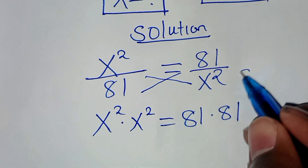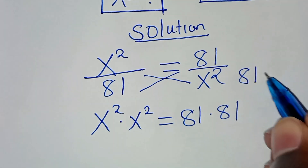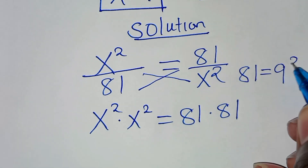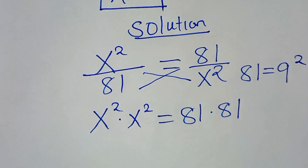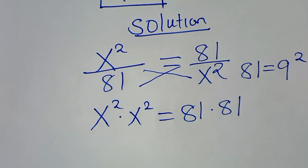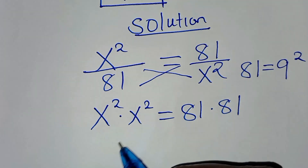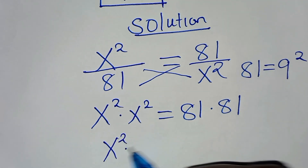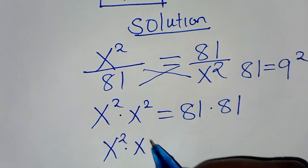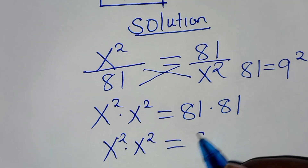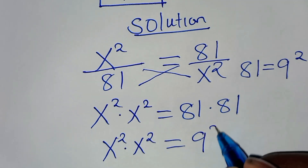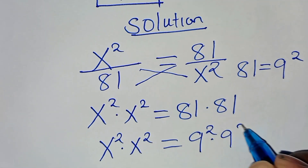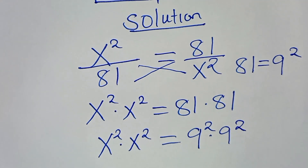The next step is that we can express 81 as 9 to the power of 2. So substituting this, we have x to the power of 2 times x to the power of 2. This is equal to 9 to the power of 2 times 9 to the power of 2.